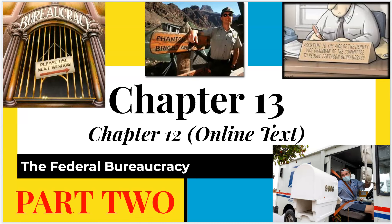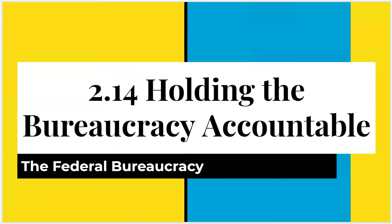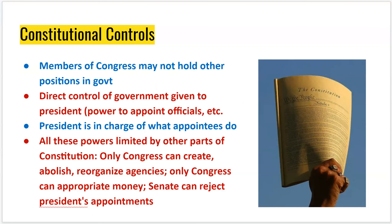Welcome to part two of the federal bureaucracy. In this part, we're going to take a look at how do we hold the bureaucracy accountable and how does the bureaucracy impact public policy. We're looking at 2.14 in the course exam description of AP U.S. Government and Politics — holding the bureaucracy accountable. Let's start by looking at the controls that the Constitution gives us in terms of the bureaucracy.